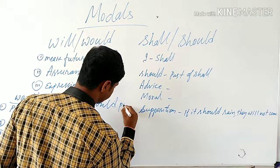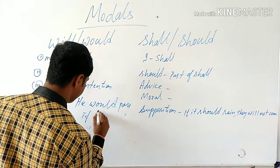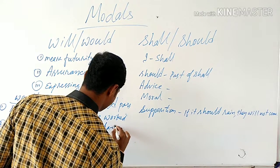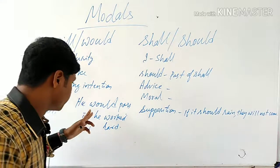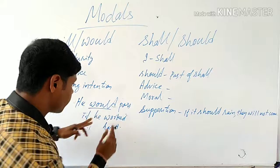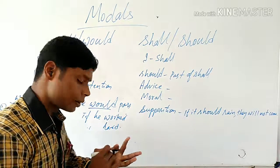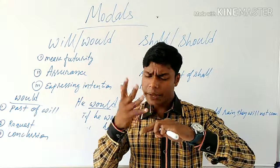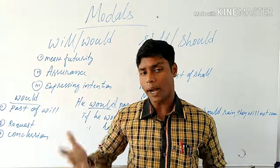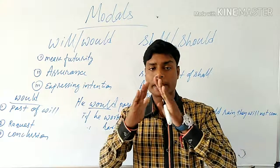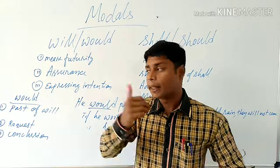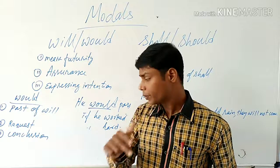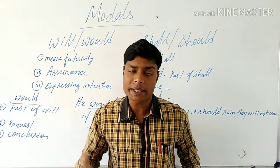In the sentence 'He would pass if he worked hard,' would is the past form of will and we are giving a conclusion. In the present tense you say 'He will pass if he works hard,' but in the past form you say 'He would pass if he worked hard.' Both forms are used accordingly.